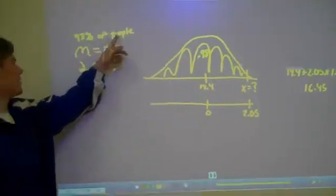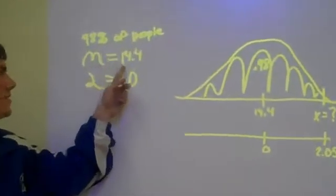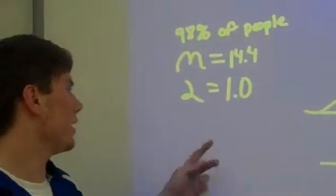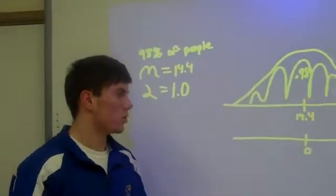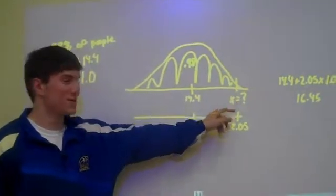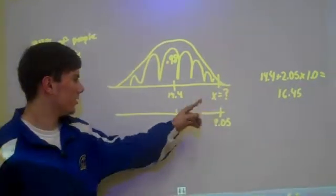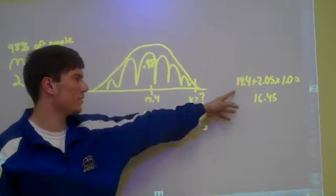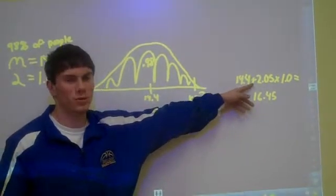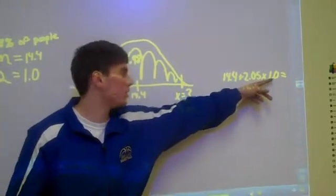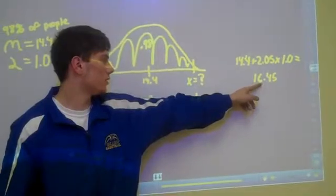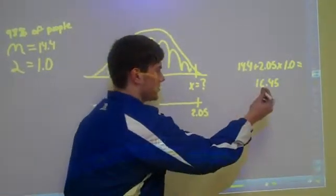We have 98% of people, our mean is 14.4 and our standard deviation is 1.0. We are trying to find this x right here, so we put in our little equation right here. We have 14.4 plus 2.05 times 1.0 equals our answer.